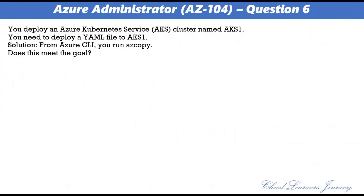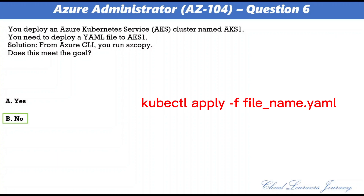Question 6. You deploy an Azure Kubernetes Service cluster named AKS1. You need to deploy a YAML file to AKS1. The proposed solution is: from Azure CLI, run az copy. Does this meet the goal? The correct option is B: No. To deploy a YAML file you need to run the Kubernetes command-line client, kubectl. kubectl is already installed if you use Azure Cloud Shell. The command is: kubectl apply -f <path/filename>.